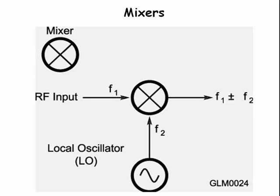Mixers actually multiply two signals together, generating two output signals: the sum and the difference of the frequencies of the two input signals. If you mix an RF input signal F1 with the output of a local oscillator F2, you generate an output at F1 plus F2 and a second output at F1 minus F2.